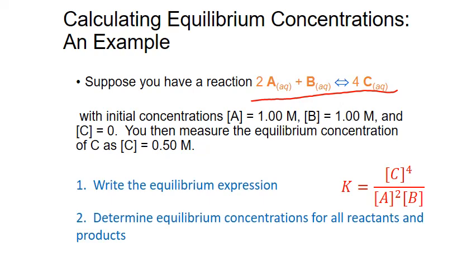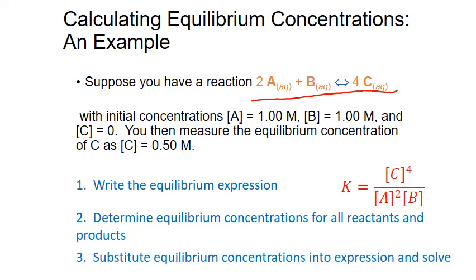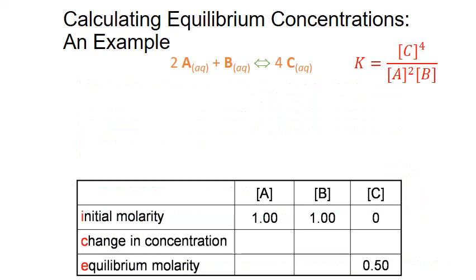Our second step will be to determine the equilibrium concentrations for all of our reactants and products — A and B in this case. Then we'll substitute all of these equilibrium concentrations into our K expression and solve. Our next step will be to construct what's known as an ICE table. The I stands for initial concentration or molarity, the C stands for the change in concentration, and E stands for our final concentration or molarity at equilibrium.